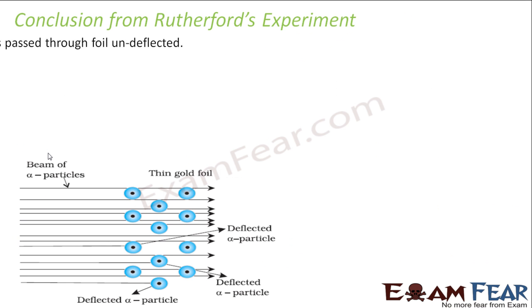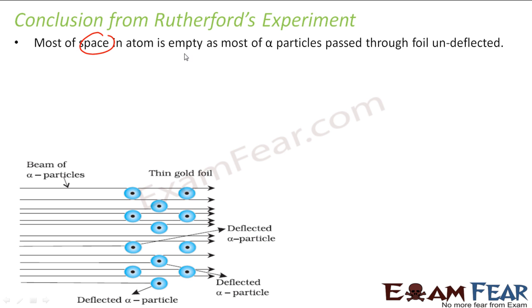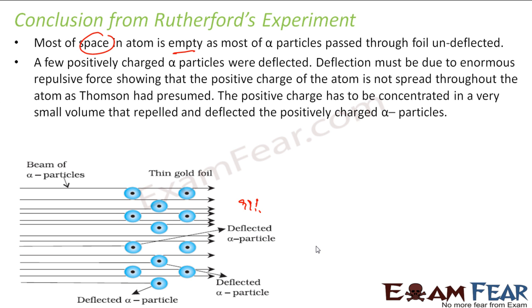The conclusion from this experiment was that most of the space in the atom is empty, because 99% of the alpha particles just went straight undeflected. A few alpha particles got reflected and came back, meaning there must be something very dense. Since alpha particles are positively charged and bounced back, that dense region must also be positively charged, because if it was negatively charged they would have been attracted.